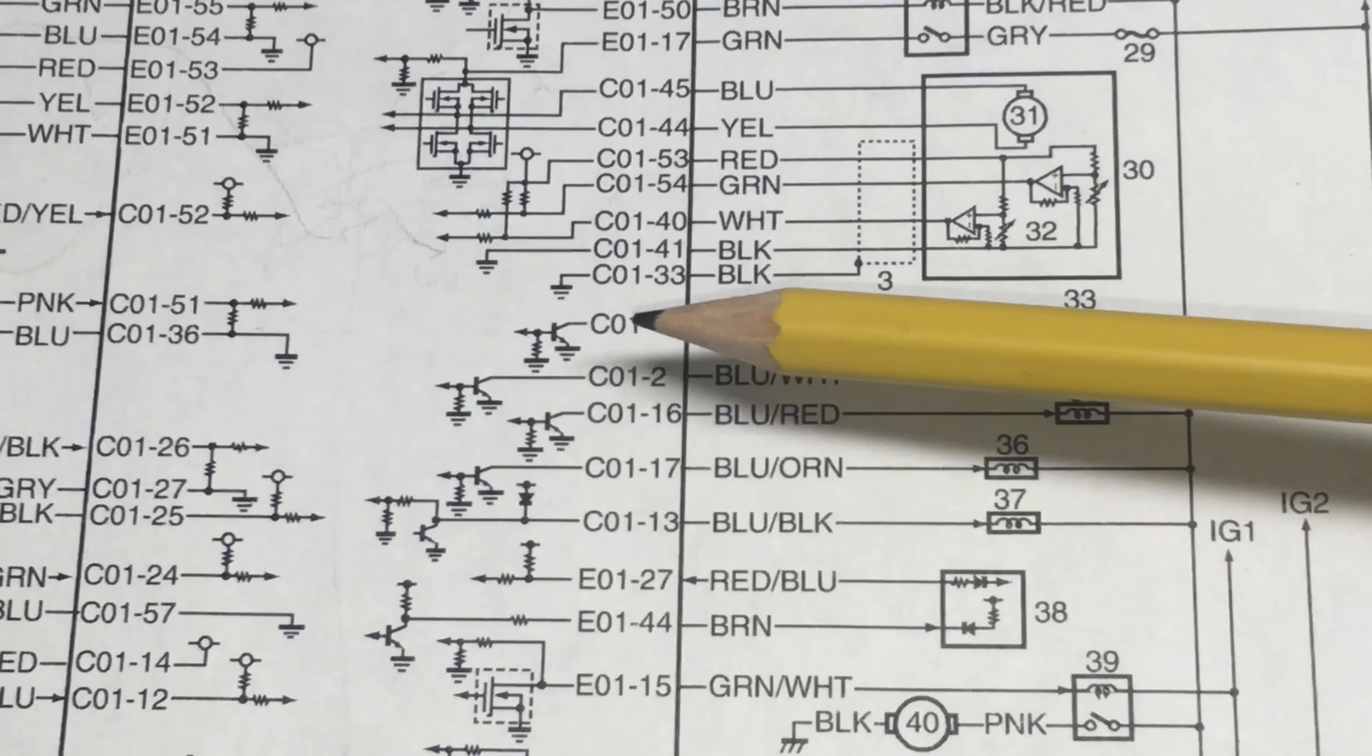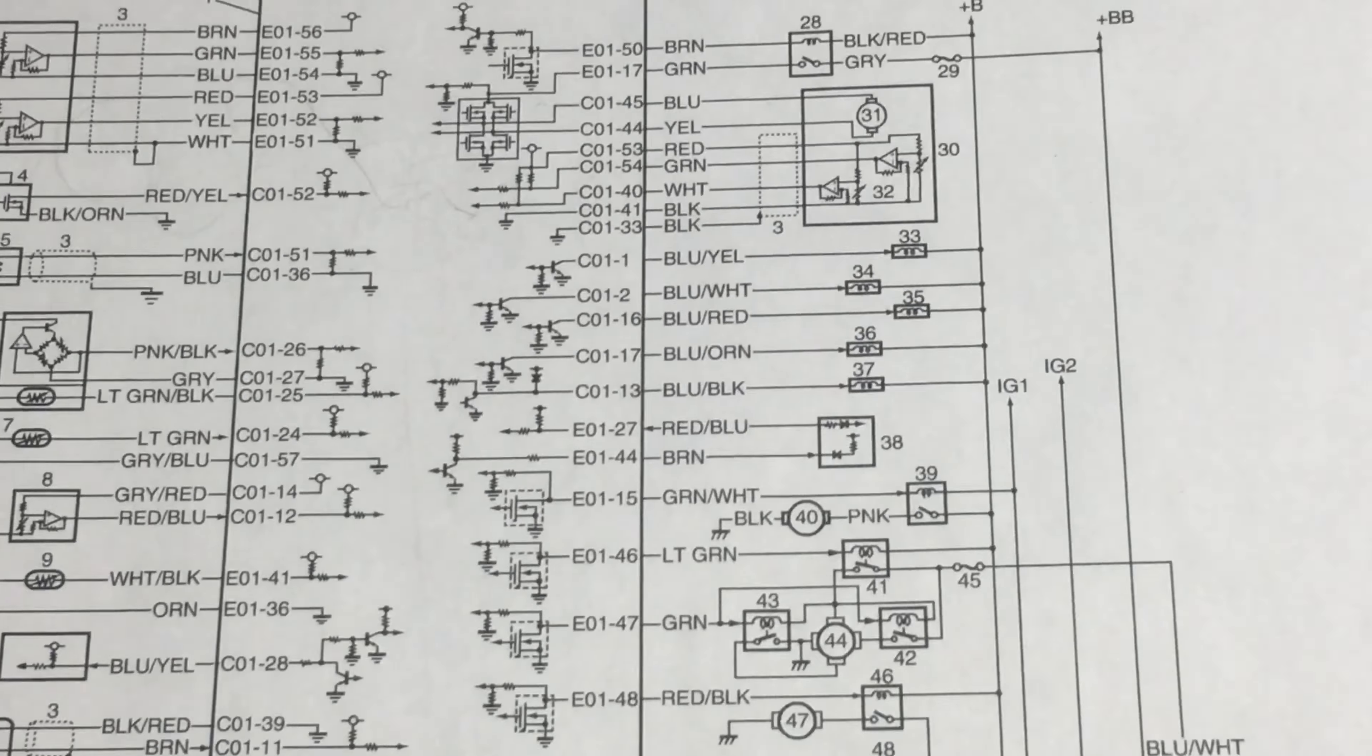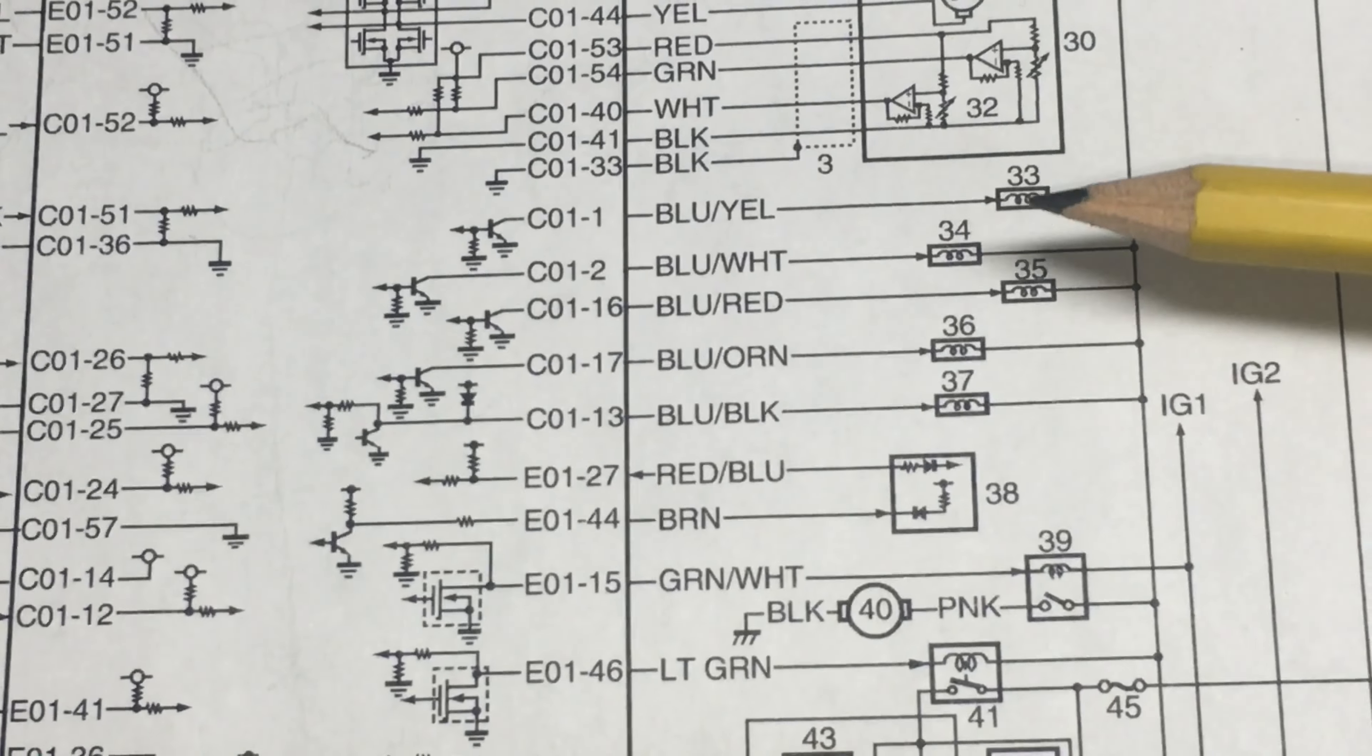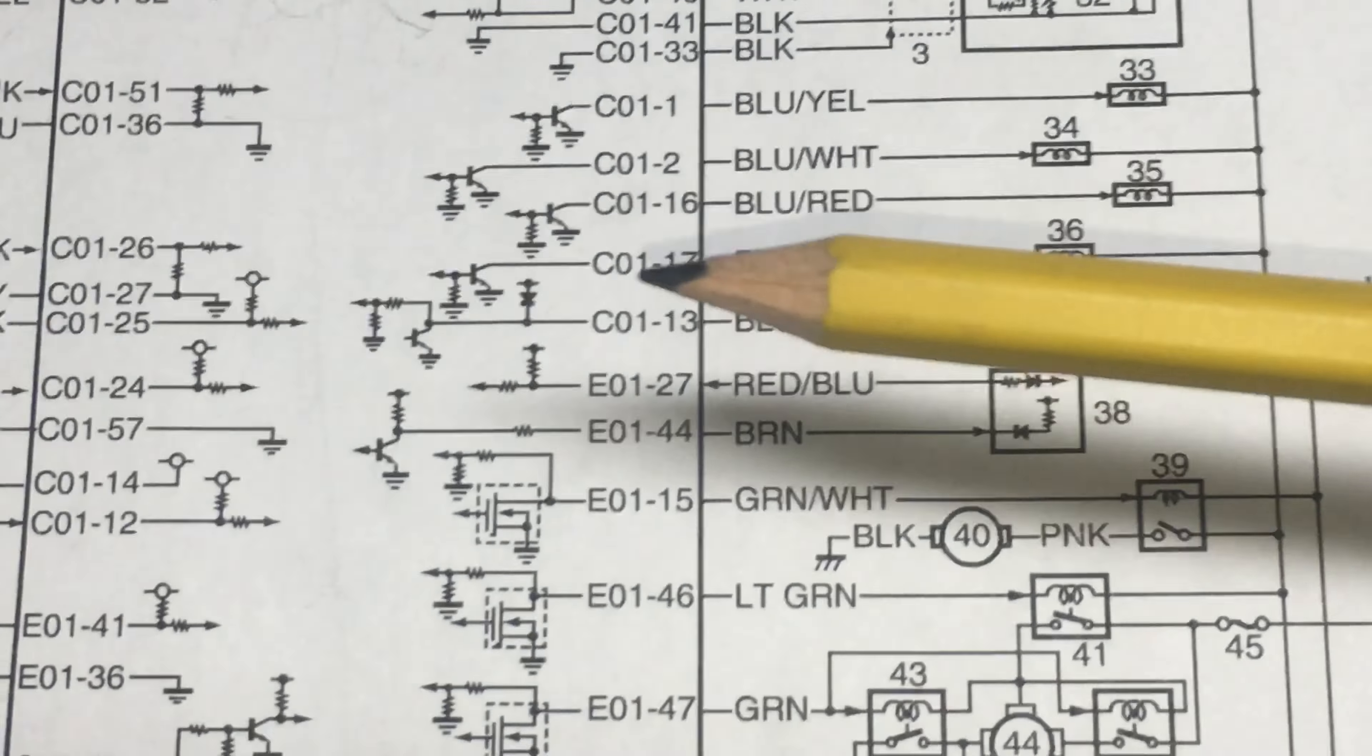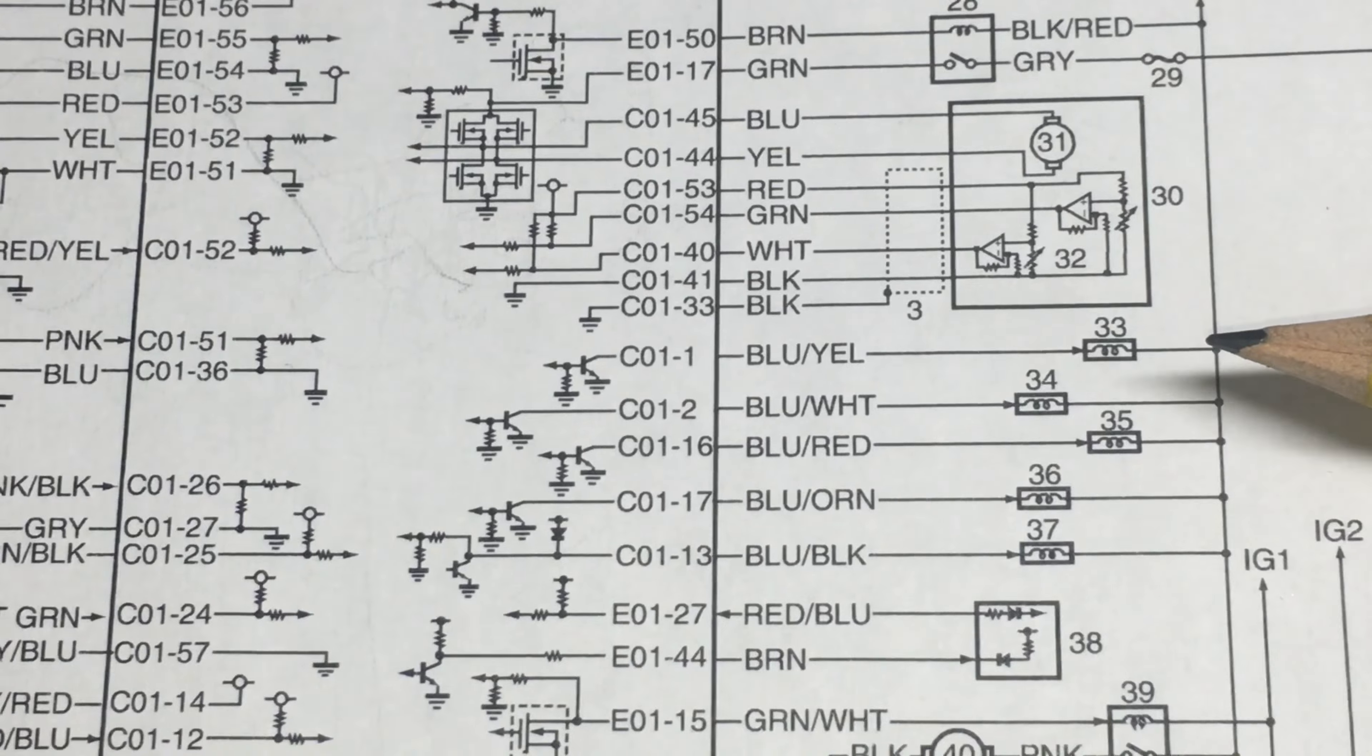I guess it makes sense at this point to see where the switching inside the ECM is actually done. This is the ECM. This is all the sensors and actuators on the car. You can see in the case of the four injectors there are drivers inside the ECM for each one.